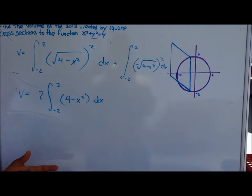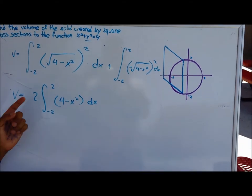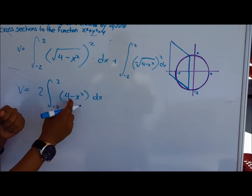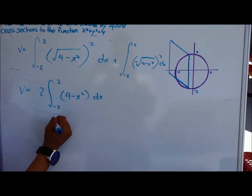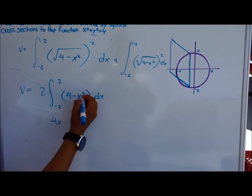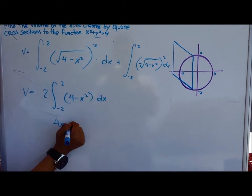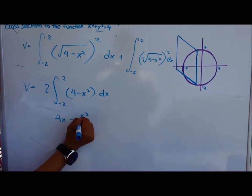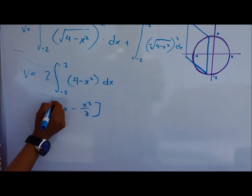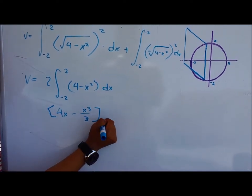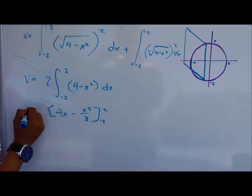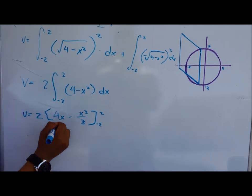Now here is basic integration. Of course, we know the integral of 4 would be 4x, and the integral of x squared would be x cubed over 3, all evaluated from negative 2 to 2, all times 2.